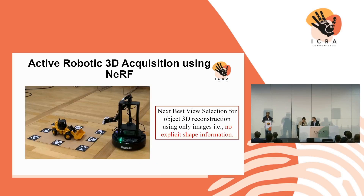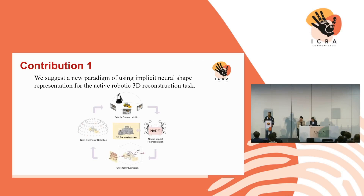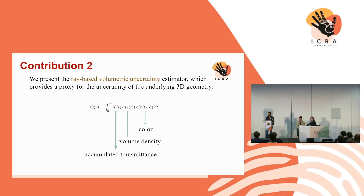This is also studied as the next best view selection problem. From a neural radiance field perspective, we can reason about the scene as to how much information we can gain from a given viewpoint. We suggest a new paradigm of using neural representation to solve this active acquisition problem. Because we don't have an explicit notion of the geometry, we have to somehow quantify how much information we're going to gain from this multi-layer perceptron representation.